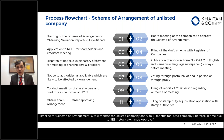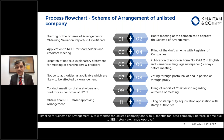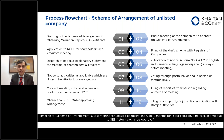Once the scheme, valuation report, and auditor certificate are ready, they must be placed before the board for approval. As the next step, we approach the NCLT either to convene a shareholders and creditors meeting or ask for a dispensation of those meetings. If you are able to obtain written consent from shareholders or creditors beyond a prescribed value, the NCLT has the power to dispense with the meetings. If not, the tribunal will call for meetings of shareholders and creditors, which must then be approved by 75% in value and more than 50% in numbers.